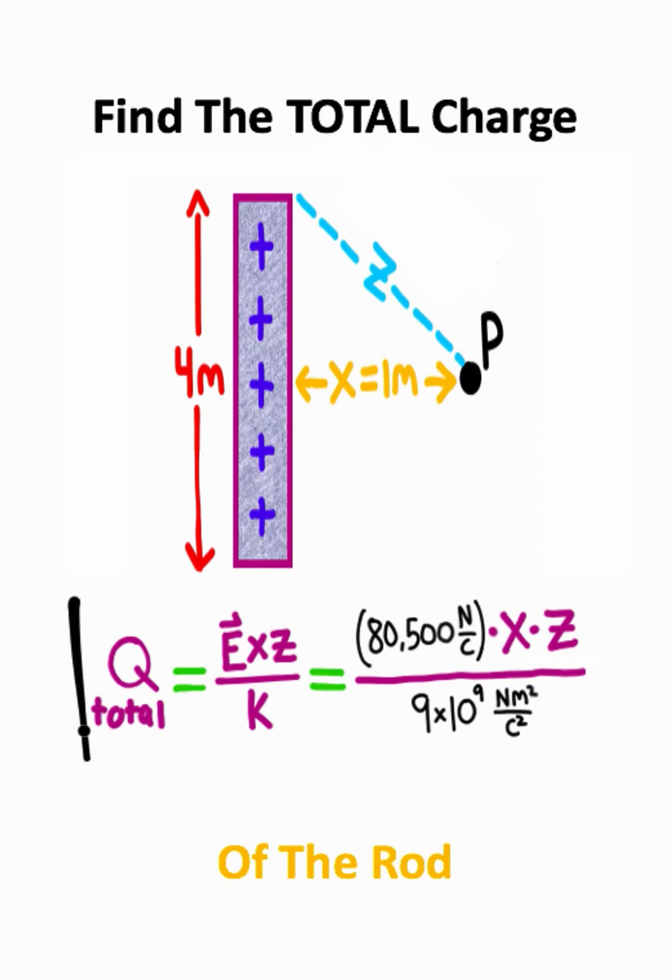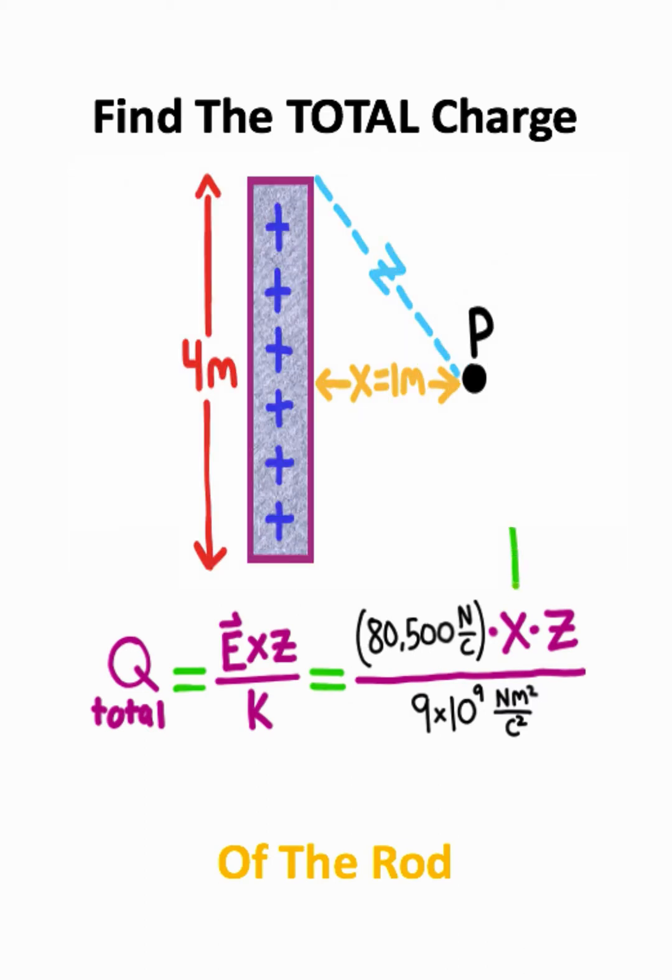Now notice I also have an equation for the total charge, but if you look to the right of this equation, I actually have the electric field at point P as well as Coulomb's constant given in this equation already. The x variable is pretty easy because we're given that x is equal to one meter, so we can just plug that in for x.